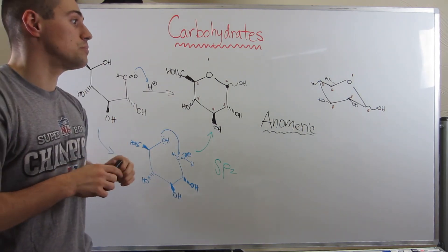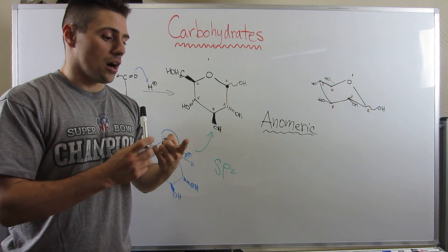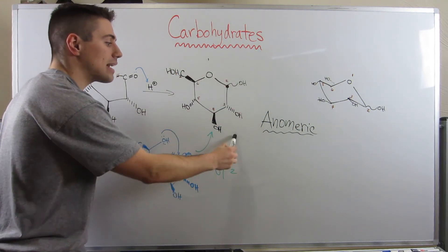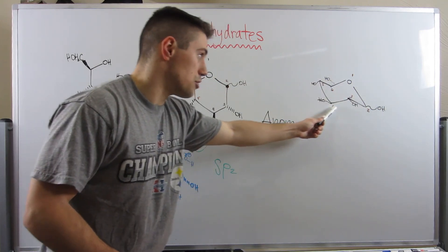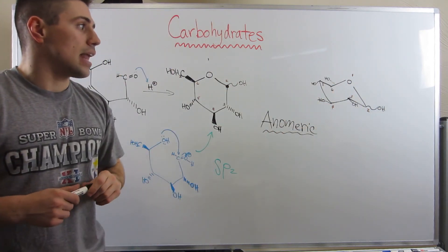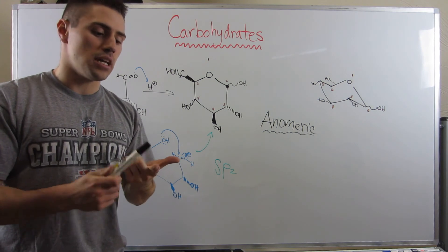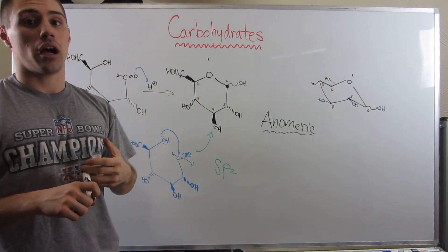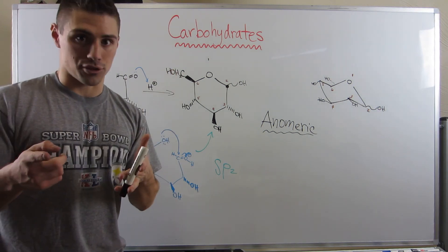Moving forward, we're going to look at how to represent sugars. We saw a little flat bond line action here and did the chair conformation. Now I want to do a little more practice with Fisher projections and also introduce and practice a new kind of representation of sugars called Haworth projections.